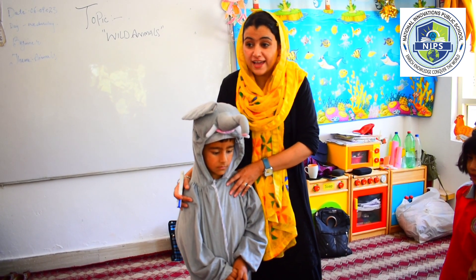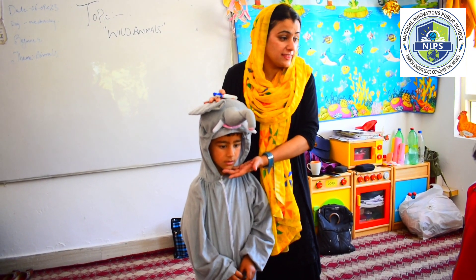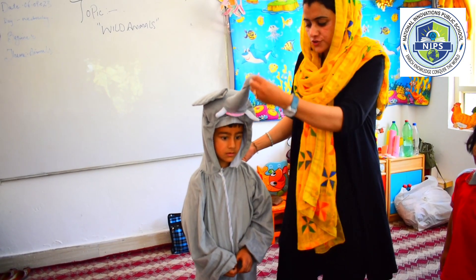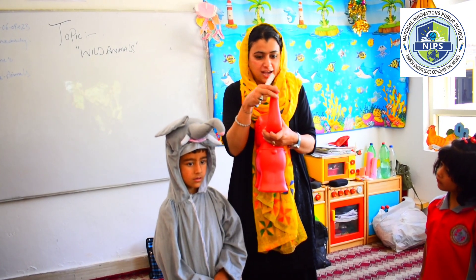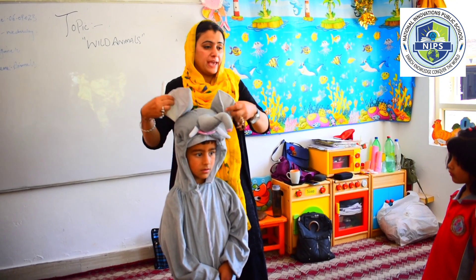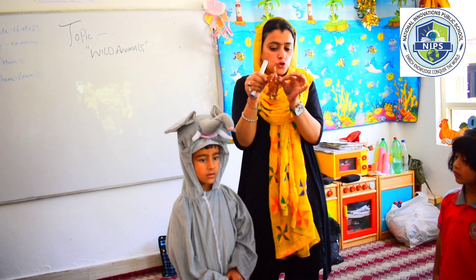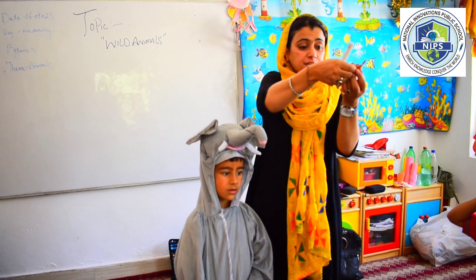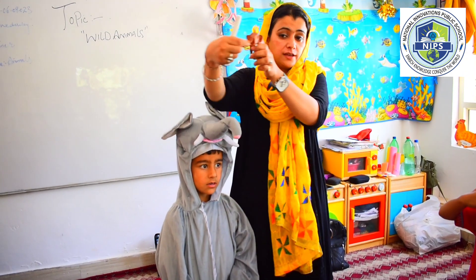Can anybody guess which animal is this? Elephant! Very good. This is an elephant. Elephant has a huge body and a big trunk. It has big ears — elephant has two big ears. And two big teeth.